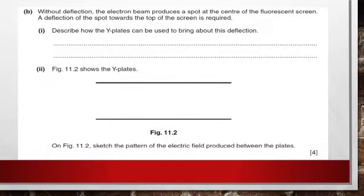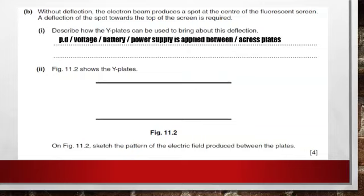B. Without deflection, the electron beam produces a spot at the center of the fluorescent screen. A deflection of the spot towards the top of the screen is required. Describe how the gamma plates can be used to bring about this deflection. The potential difference, or the voltage, or the battery, or the power supply is applied between or across the plates. The upper plate is positive and the lower plate is negative.